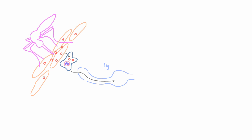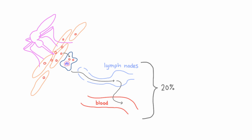The mosquito bites, viral particles get into the skin and infect skin cells. Eventually, they infect immune cells that travel to lymph nodes and the blood. In 20% of cases, this causes flu-like symptoms and a rash. We refer to this as West Nile fever.